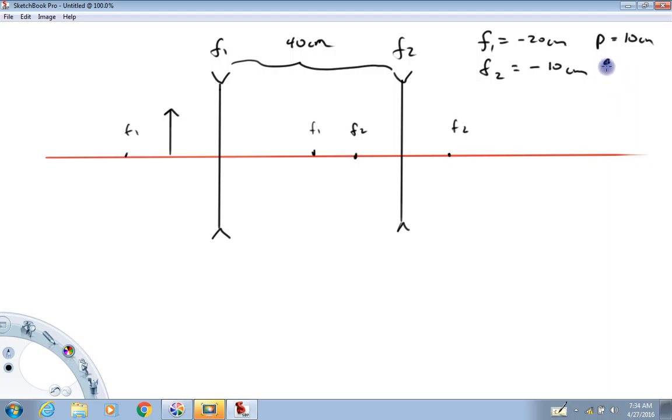What are we looking for? Q final and M final, total magnification of the system. The way you work a two or three optical element problem is just one at a time. The important thing is you have to completely ignore the second element. I'm going to work the first lens element completely ignoring, just pretend like that second one doesn't even exist.